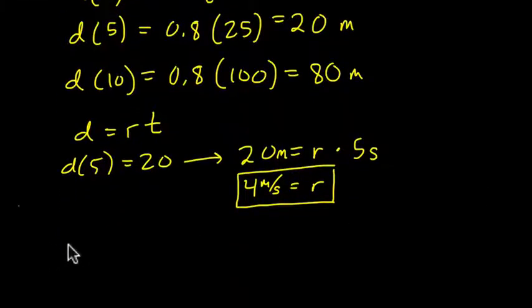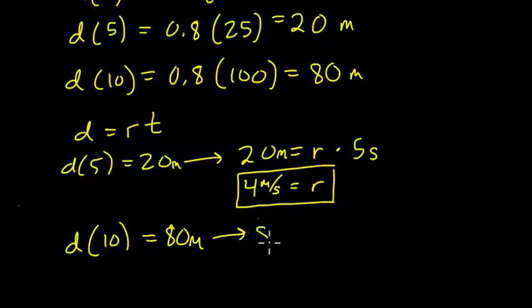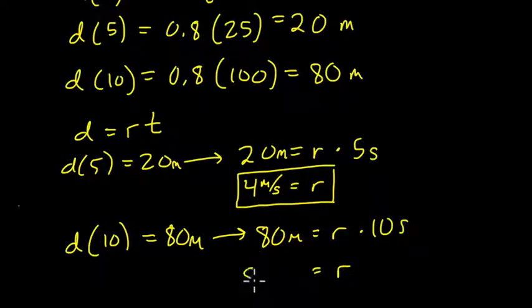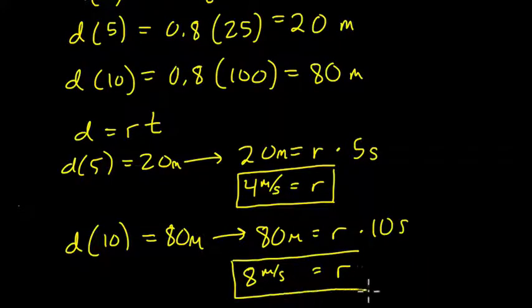Then, let's find out our rate at 10 seconds. So d(10) equals 80 meters. Then we know that 80 meters equals the rate times 10 seconds. Now we divide by 10 seconds and we get 8 meters per second. And here's where things, I think, get really awesome. So it turns out that the speed of the rocket at 5 seconds is 4 meters per second, and the speed of the rocket at 10 seconds is 8 meters per second. And the average speed is not 8 plus 4 divided by 2. What?